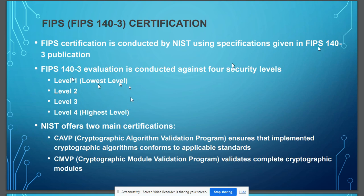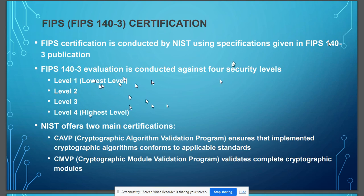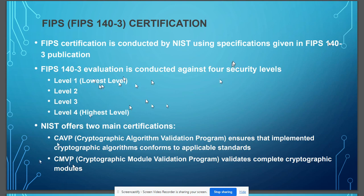It can take from a few months to more than one or two years to get evaluated. There are two certifications you need to get in order to be FIPS certified, and both are offered by NIST. The first is called CAVP and the second is called CMVP. CAVP is a prerequisite for CMVP — you cannot go for CMVP until you have completed CAVP.